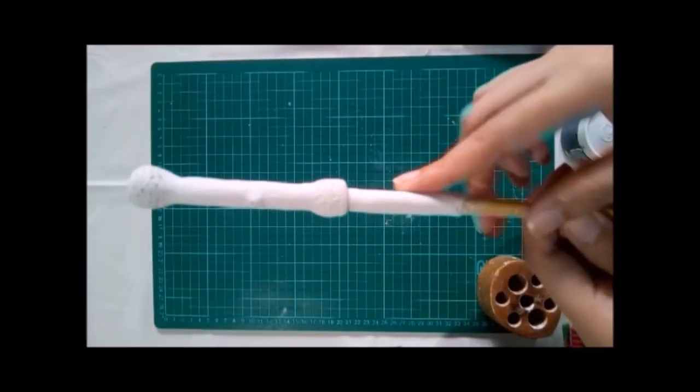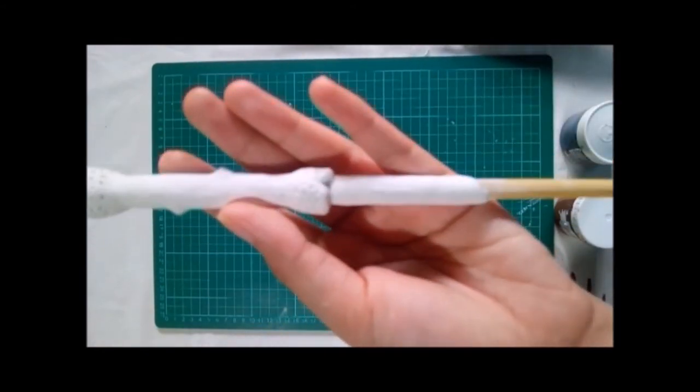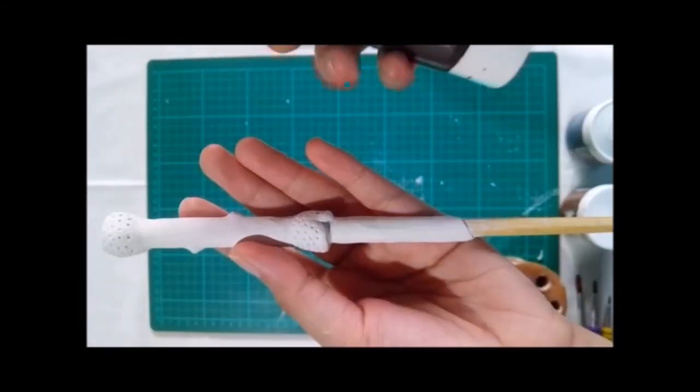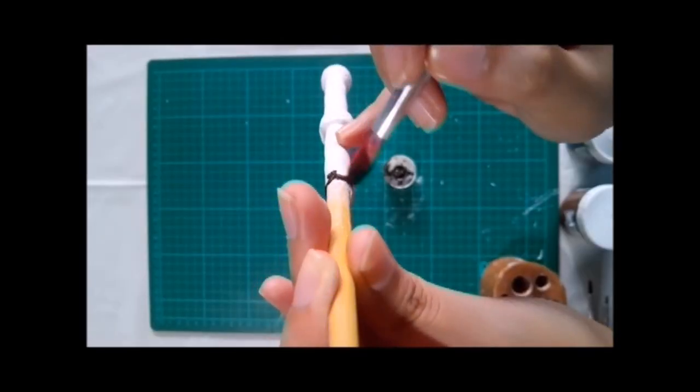Now it's time to paint. For the middle part, we'll be using acrylic paint in raw umber.